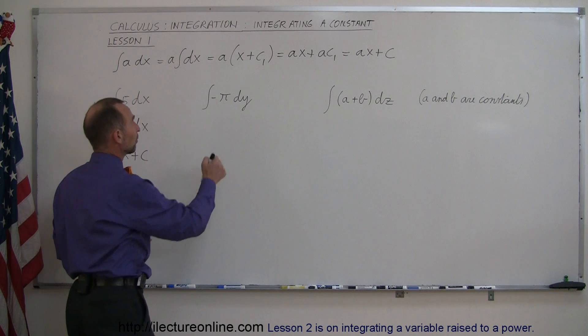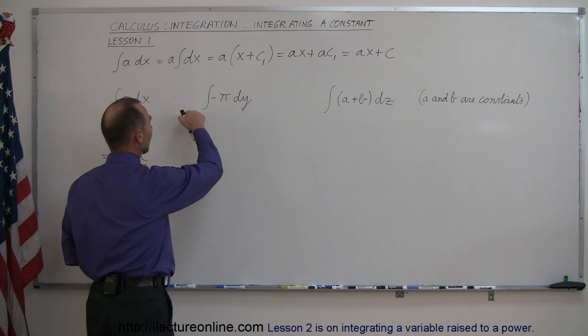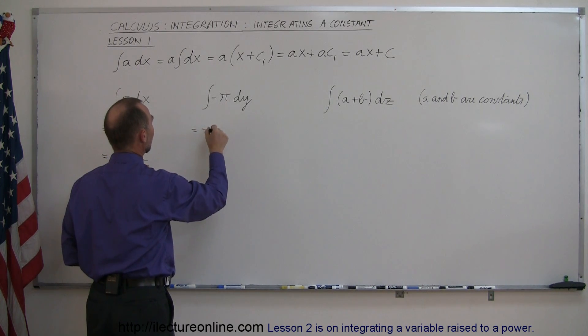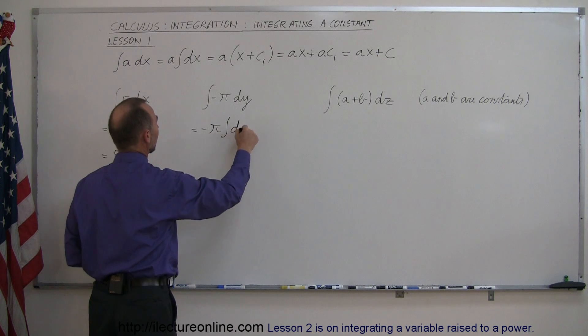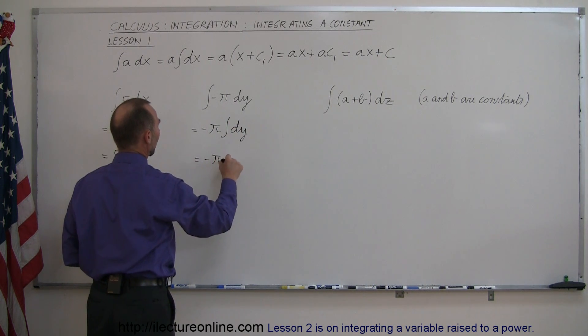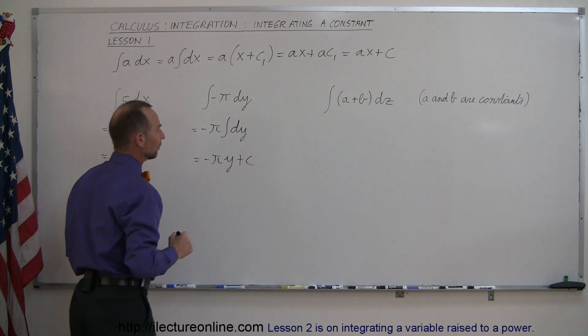Here, our second example. Pi is a constant, so we can move that outside the integral sign. It's equal to minus pi times the integral of dy. So this becomes equal to minus pi times y plus the constant of integration.